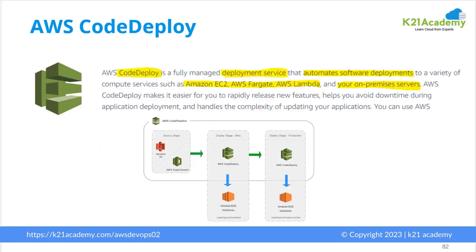Once you have generated the artifact, you need to deploy it on a server. CodeDeploy is a fully managed deployment service that automates software deployment — whether it's a Java-based application, a .NET application, or a container image. It can deploy artifacts generated by CodeBuild to various compute services: EC2, Fargate (the serverless Docker and Kubernetes version), Lambda functions, or even your on-premise servers.